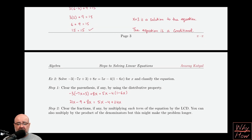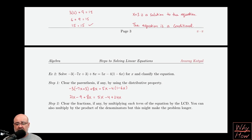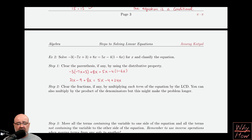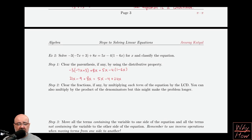Step 2 is always clear the fractions if there are any, but in this case we don't have any fractions, so we can skip ahead to step 3, which is isolate stuff. Get all the x's on one side, get all the non-x's onto the other side.